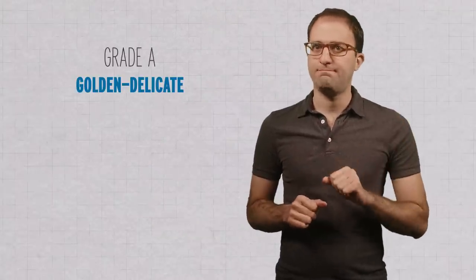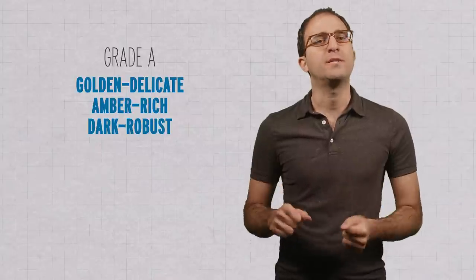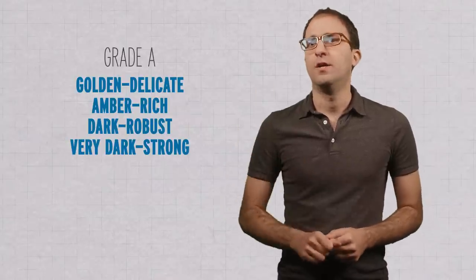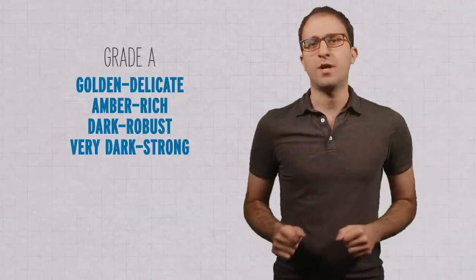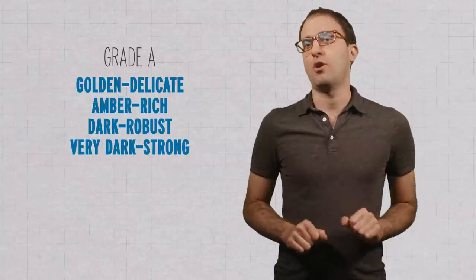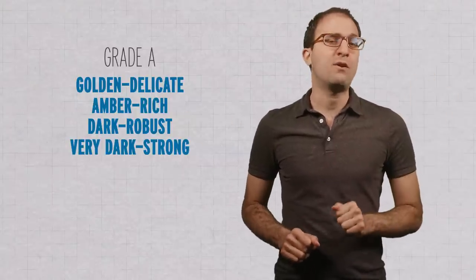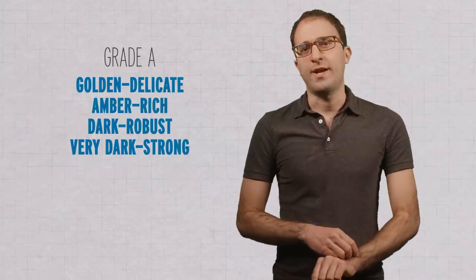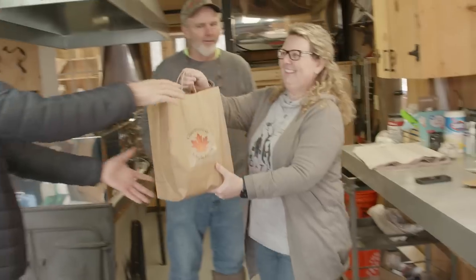So these days, there are four types of grade A syrup. Golden delicate, amber rich, dark robust, and very dark strong. The words before the dash refer to the color, and the words after it refer to the flavor. There's no grade B anymore. What used to be called grade B is now called grade A dark robust, or grade A very dark strong. Thank you very much.